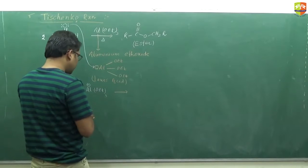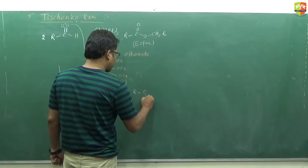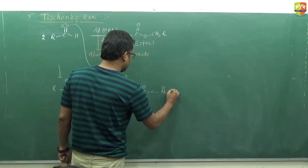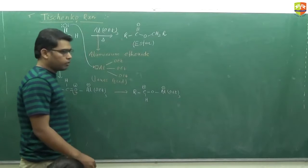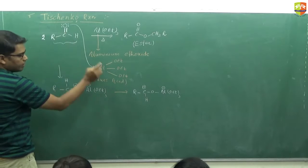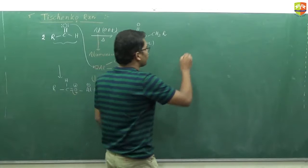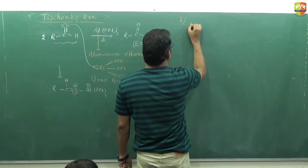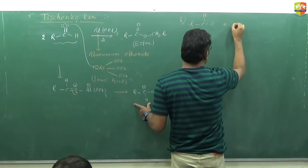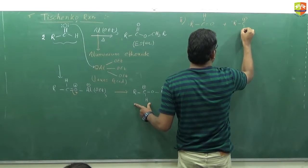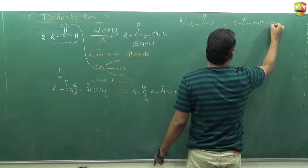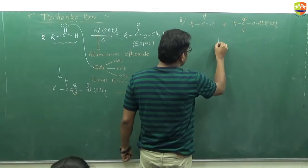Now to stabilize this positive charge, the pi electrons are taken up by oxygen, and we get a positive charge on the carbon. So the next step is: RC⁺H — O attached to Al⁻(OEt). Now this positive charge is attacked by the lone pair of another molecule of aldehyde attacking on this positive carbon.